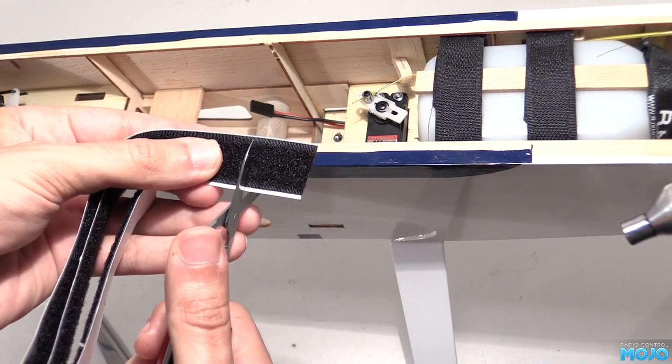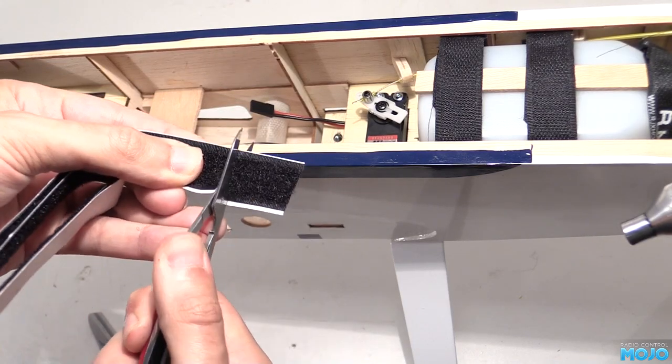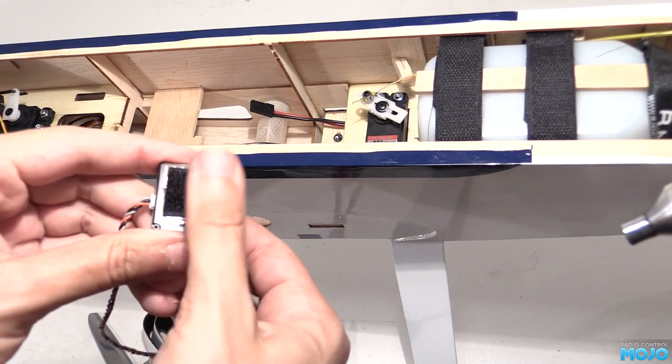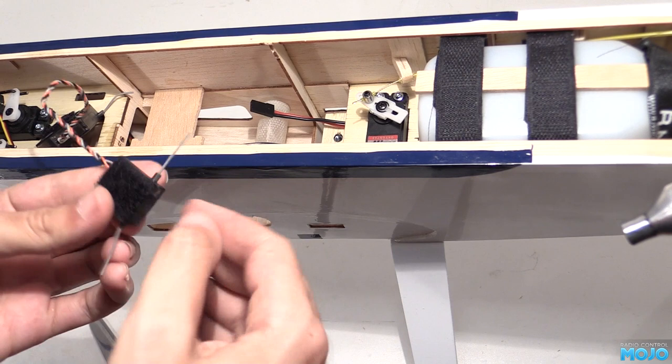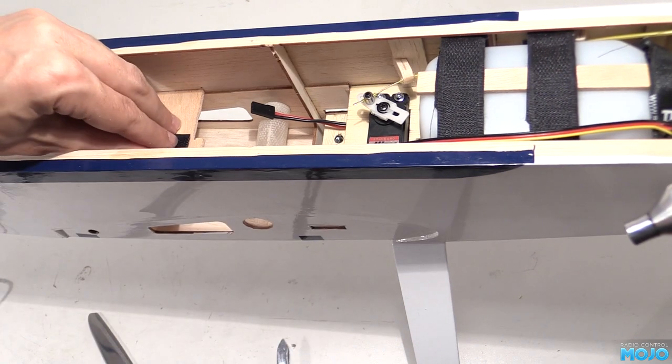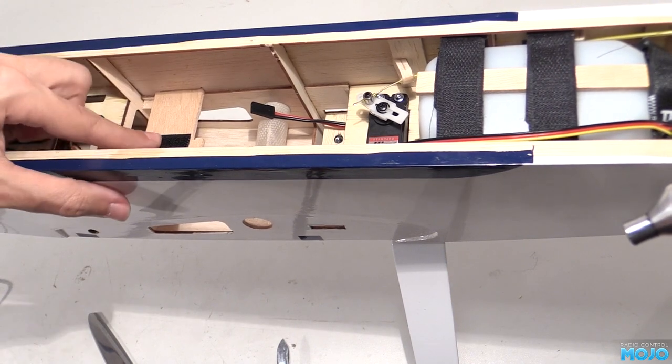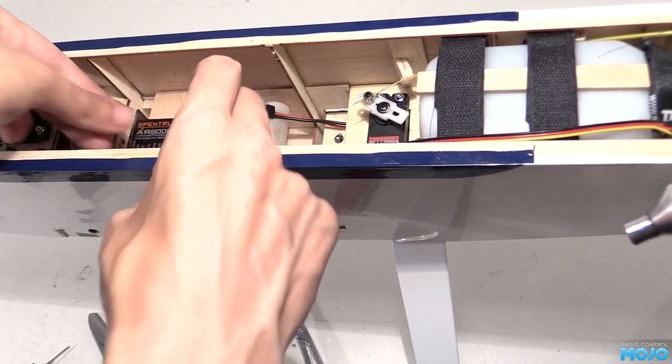I like to use some sticky back velcro. Not only does it add some extra security to the install, it also adds a little bit of cushioning, damping out some of the vibrations. The satellite receiver gets some velcro too. Because the main receiver has quite a bit of wiring hanging off it, there's a rubber band just to make sure it doesn't move around too much.